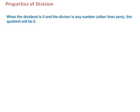When the dividend is 0 and the divisor is any number other than 0, the quotient will be 0.